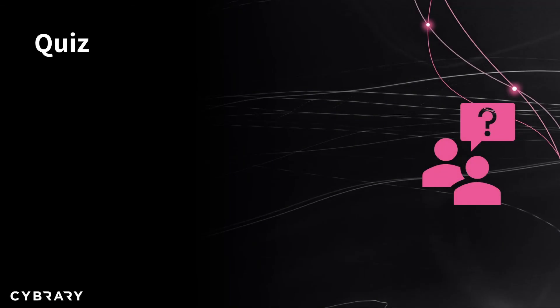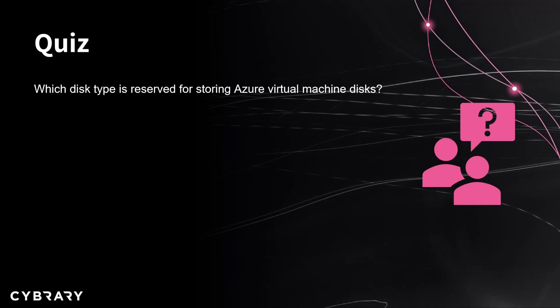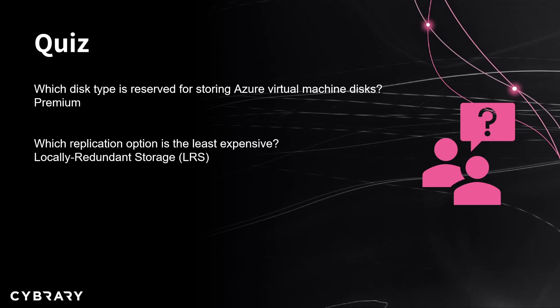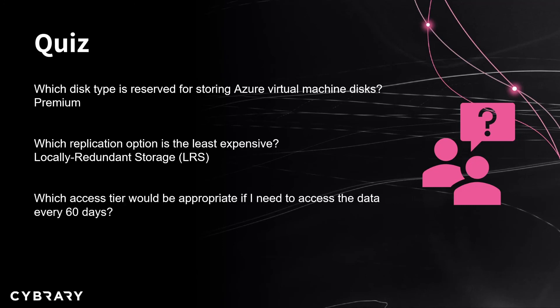That does it for some of our storage account configuration options. Let's finish this lesson out with a quick couple of quiz questions. The first one is: which disk type is reserved for storing Azure virtual machine disks? The answer to that is our premium disk type. Next question: which replication option is the least expensive? That's going to be our locally redundant storage, or LRS. Finally, which access tier would be appropriate if you need to access the data every 60 days? That's going to be our cool access tier — cool access tier is greater than 30 days, and then moving into the archive tier, which is greater than 180 days.